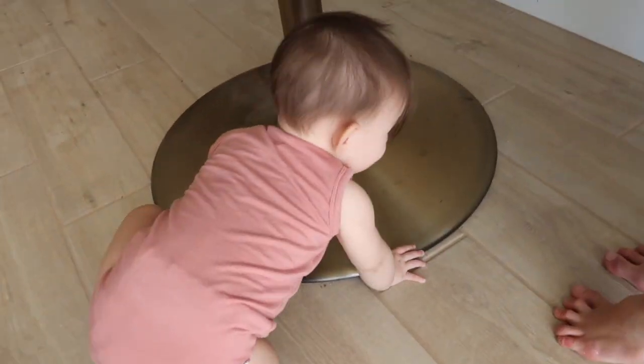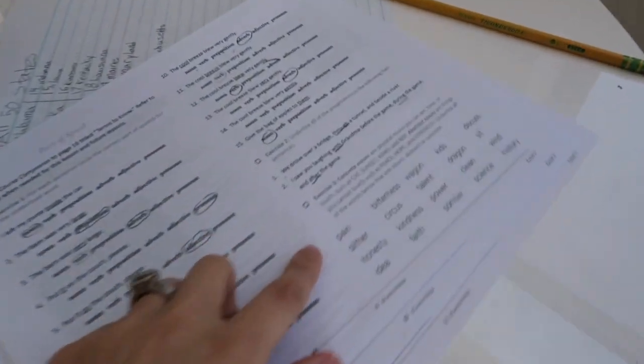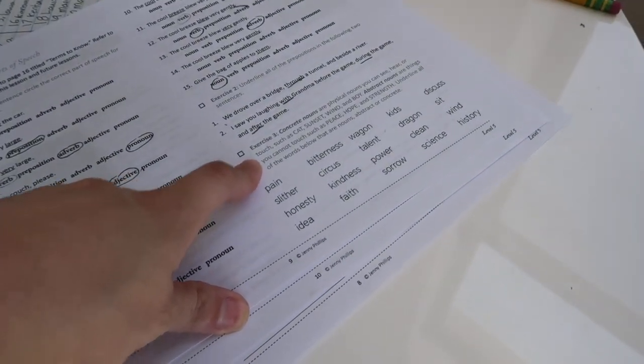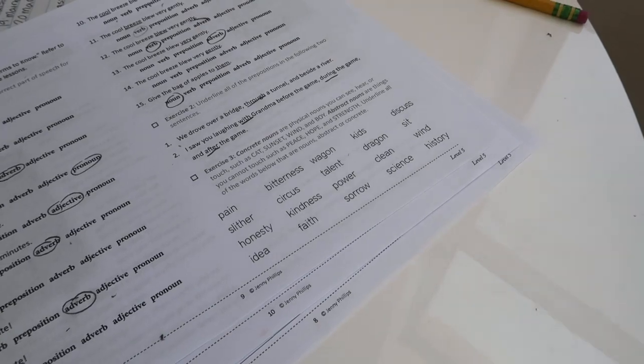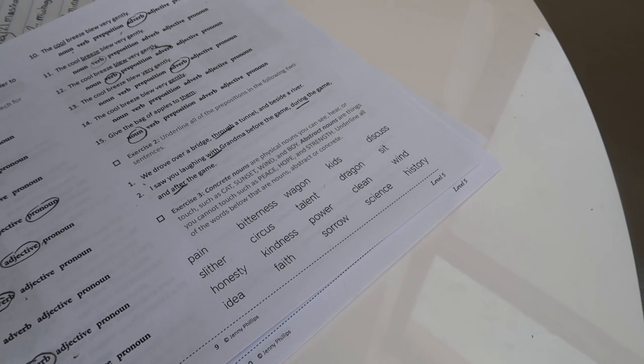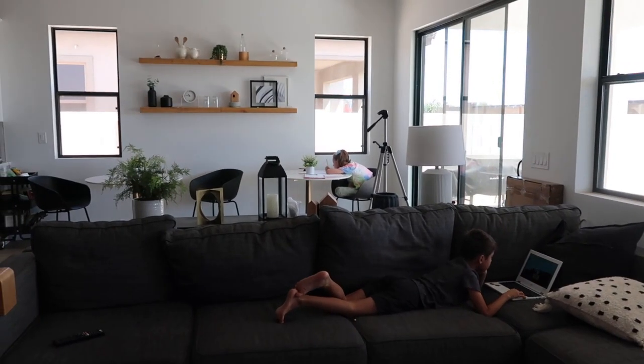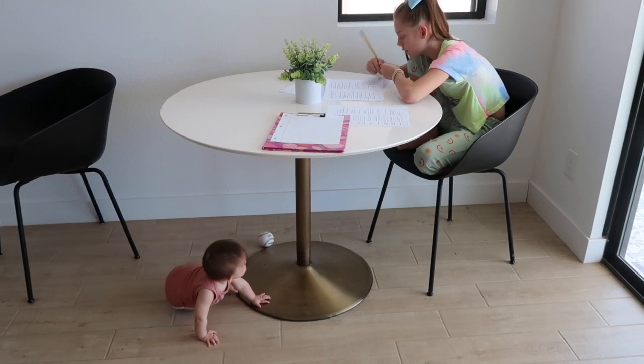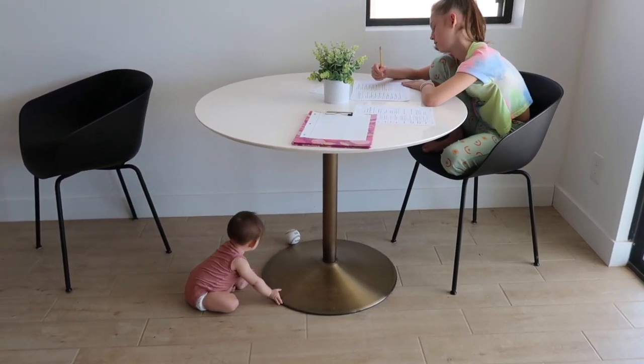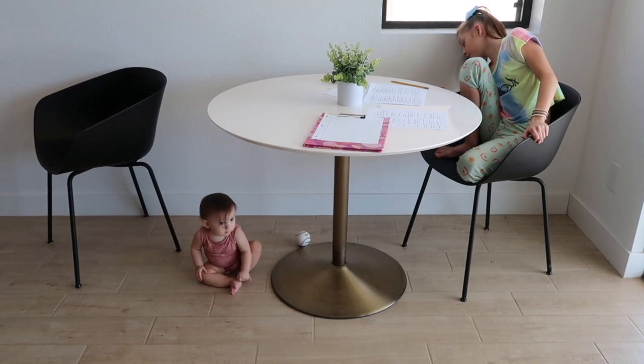Next is exercise three. Brave, I'll get. Where are you at, baby? All right, so exercise three. You're going to go over concrete nouns. Nouns are physical nouns. You can see, hear, or touch. Underline all the words below that are nouns, abstract or concrete. Okay? All right, Brave. You've got to come with me. I can't reach too far down. Oh, Brave. Whoa.